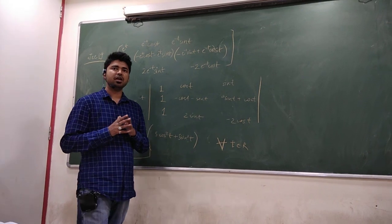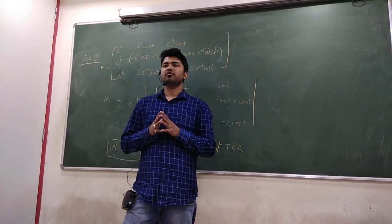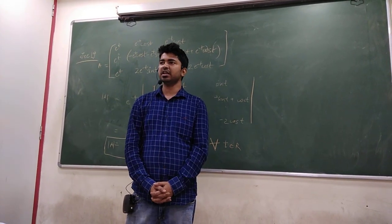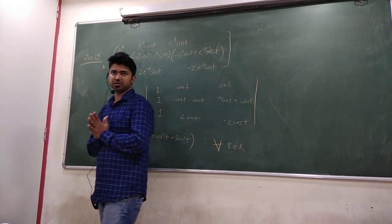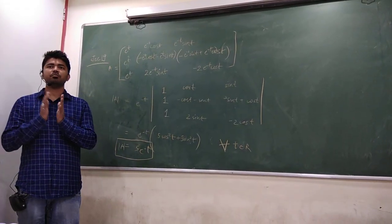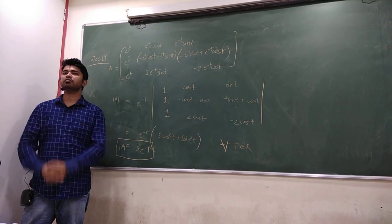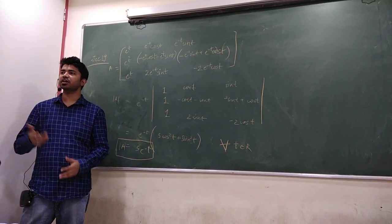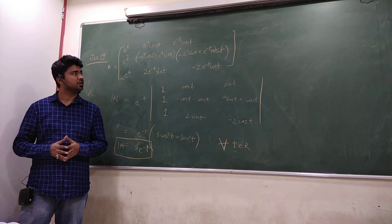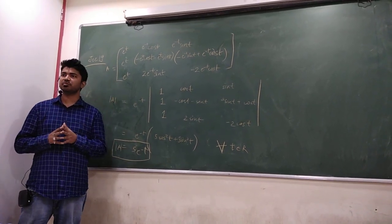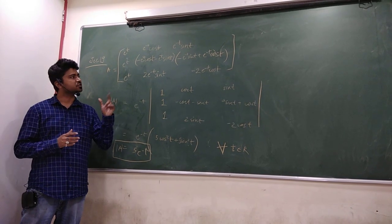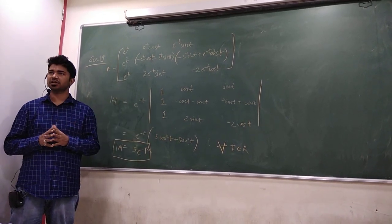So, first of all, let me tell you, a matrix will be invertible only if the determinant is not equals to 0. That means, agar matrix ka determinant not equals to 0 hota hai, tabi hum uska inverse find out kar sakte hai. So, this question mein, in order to see that it is invertible or not invertible, first of all, we need to see that what is its determinant.